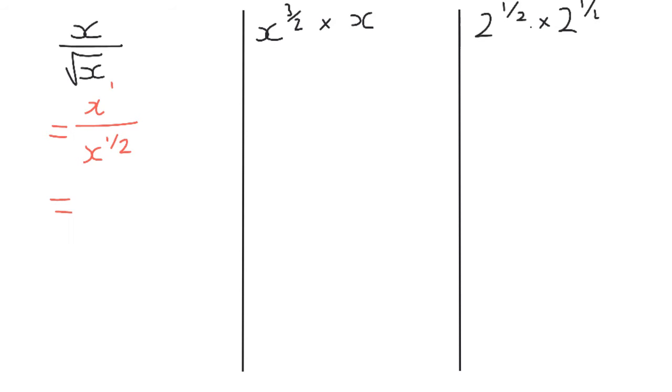Now what this means here is I've got x to the 1 divided by x to the half, which is x to the 1 minus a half, which is x to the half or just root x.